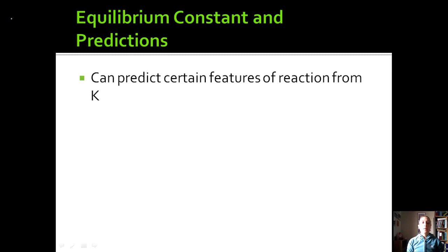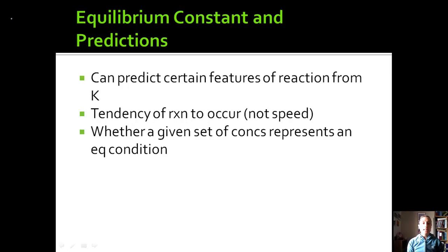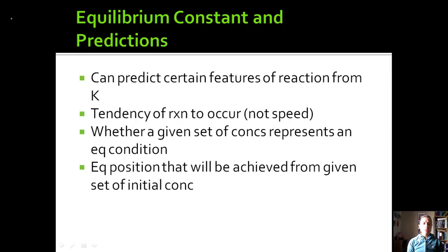We can predict a lot of things about the reaction from the equilibrium constant. For example, we can look at the tendency of the reaction to occur — not the speed of the reaction, but the tendency to occur. We can look at whether a given set of concentrations represents an equilibrium condition, and we can use it to calculate things and determine the equilibrium position.